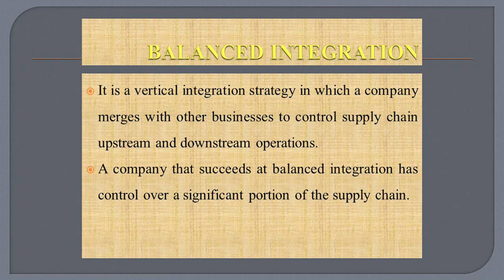The next integration is balanced integration. Balanced integration is a vertical integration strategy in which a company merges with other businesses to control supply chain upstream or downstream operations. A company that succeeds at balanced integration has control over a significant portion of the supply chain. For example, Apple has pursued balanced integration, and Amazon is also a very good example of balanced integration — it is when companies acquire steps in the supply chain both preceding and following its own link in the chain.